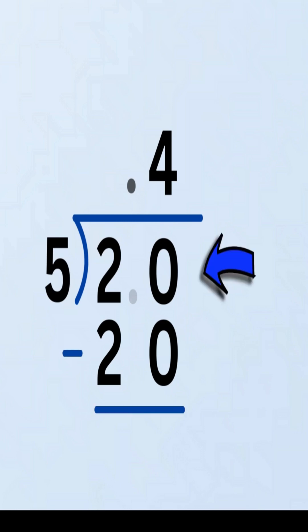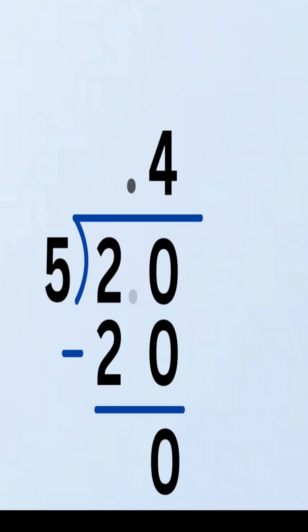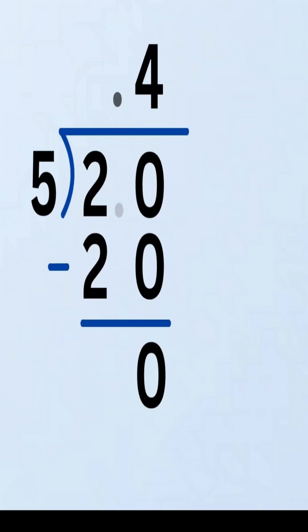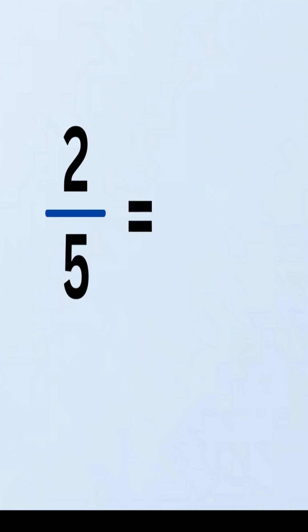Now subtract. 20 minus 20 equals 0. No remainder — we're done. So the final answer is: 2 fifths as a decimal is 0.4. Not too hard, right? Let's try another!